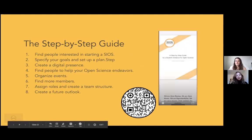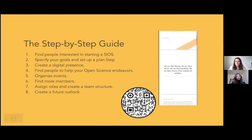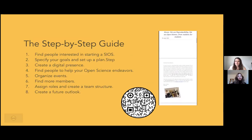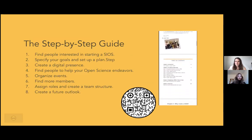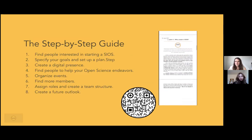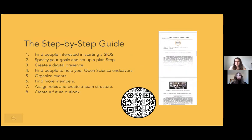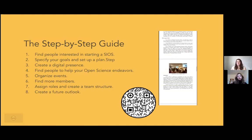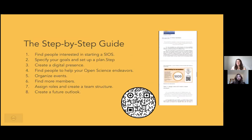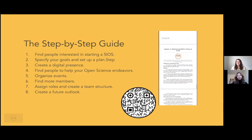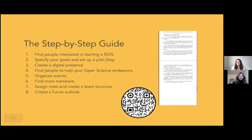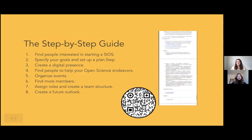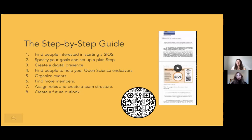This is the step-by-step guide. We have thought of eight steps, which are largely common sense. First, find some people who are interested in starting with open science. Then, specify your goals and set up a plan — not every initiative will have the same goals. Next, create a digital presence, such as a Twitter account, a website, or other social media.